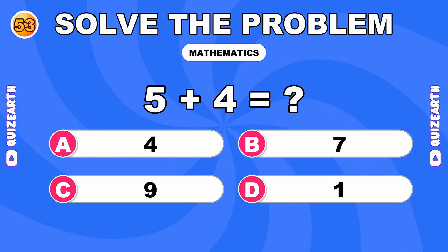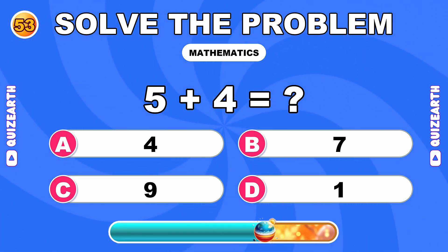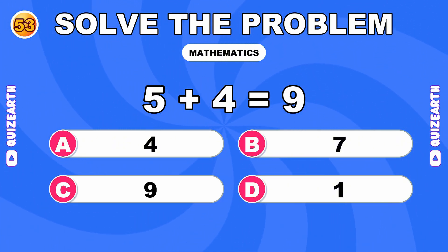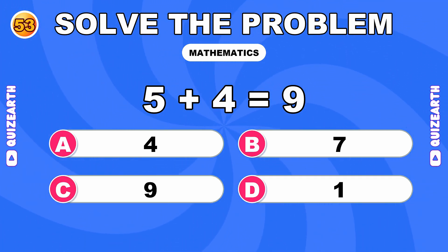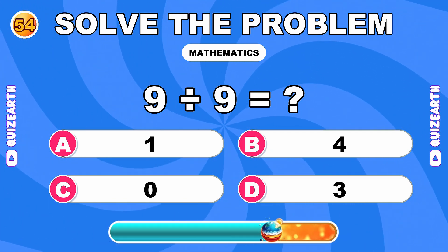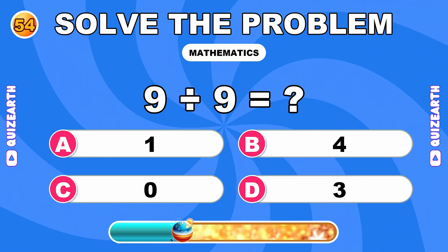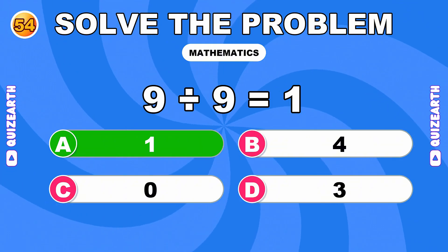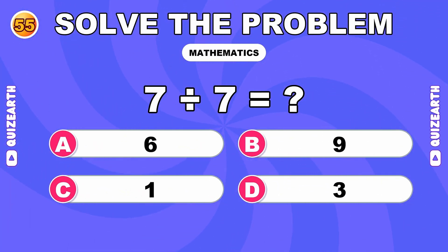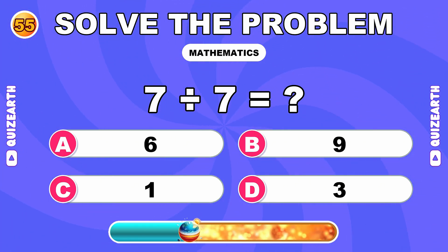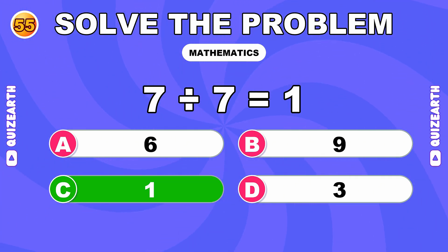How much is 5 plus 4? Unstoppable force. The answer is 9. What do you get when you divide 9 by 9? Pure velocity. The answer is 1. What is 7 divided by 7? Amazing reflexes. The answer is 1.